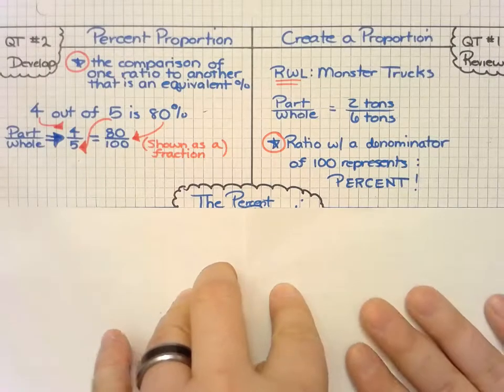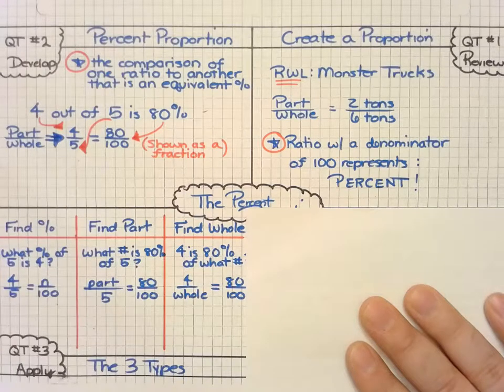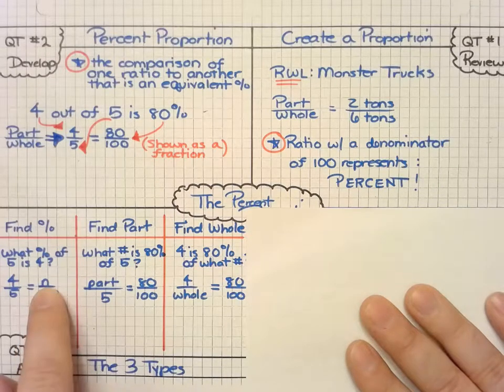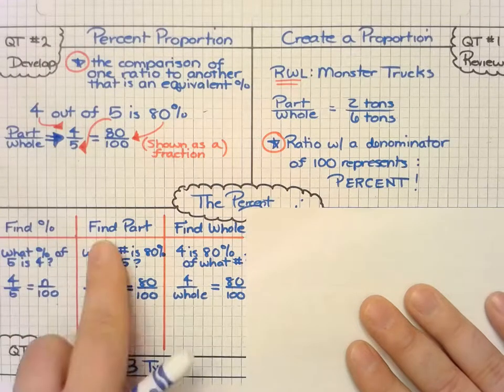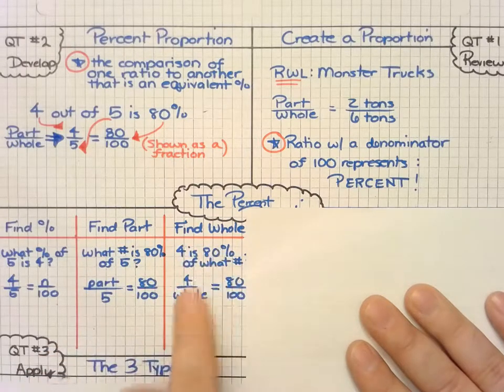There are three different questions you may be asked in order to use this percent proportion, depending on what they want you to look for. It may be that they're asking for what that percentage is, so find the percent. It may ask you to find the part, or it may ask you to find the whole.